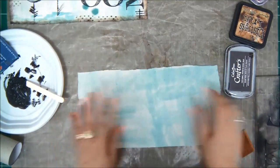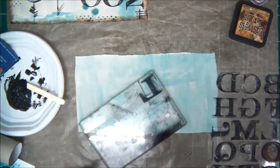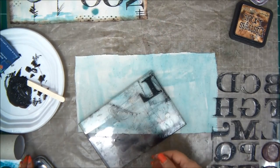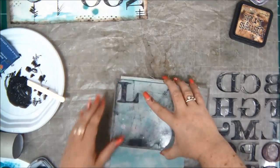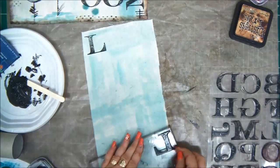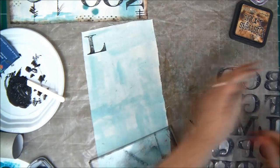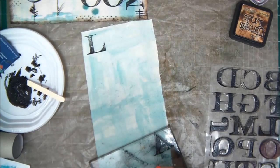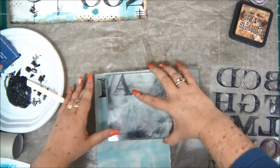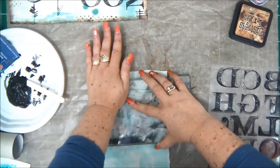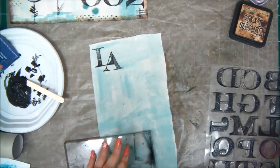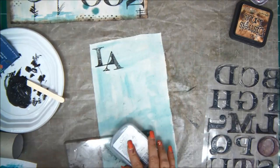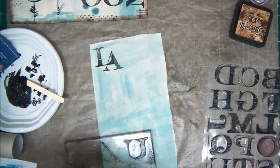I'm going to leave it to dry and start on the second page. I want to add the word laugh. So this is another way to add kind of a long word to a smaller space. And what I'm going to do is overlap the letters. So they will all fit in the space that I have. So I'm going to add all the letters.